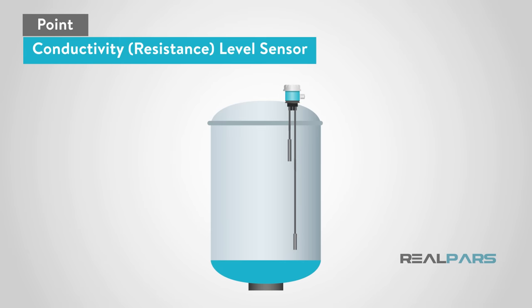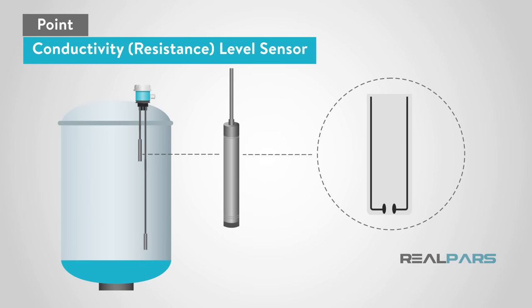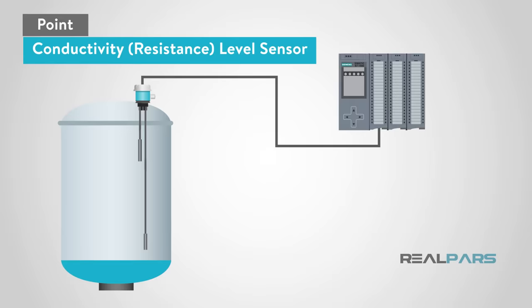Another style of point level sensor is conductivity or resistance. A conductivity or resistance sensor uses a probe to read conductivity. The probe has a pair of electrodes and applies alternating current to them. When a liquid covers the probe, its electrodes form a part on an electric circuit, causing current to flow, which signals a high or low level.